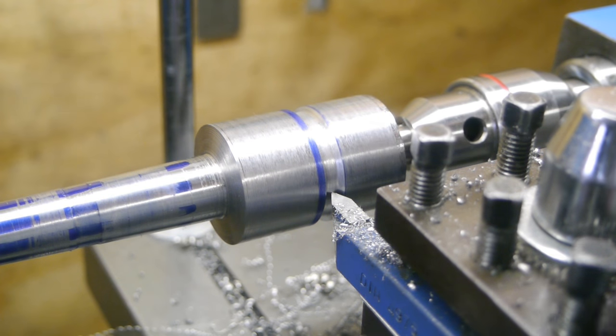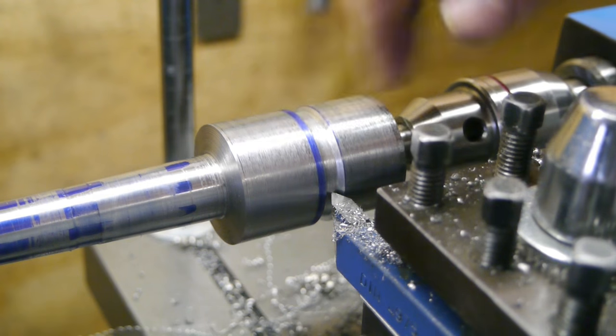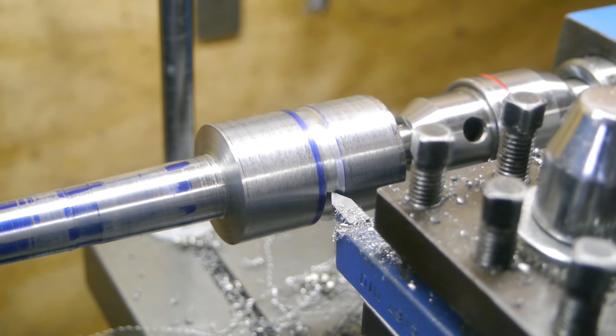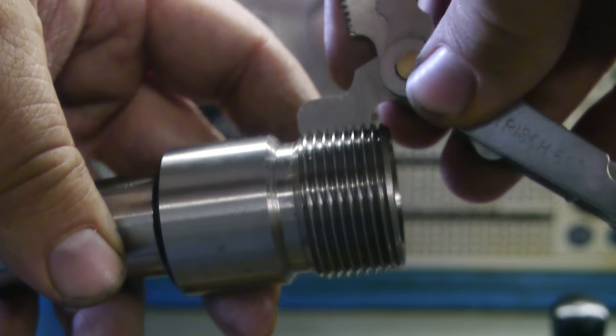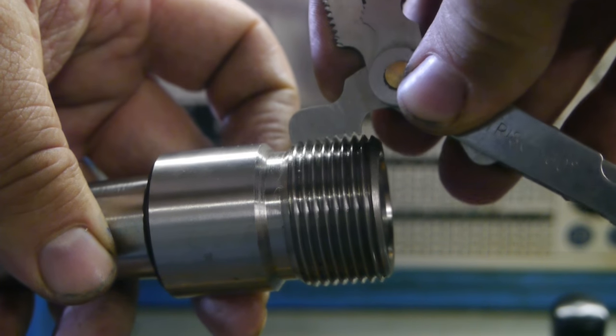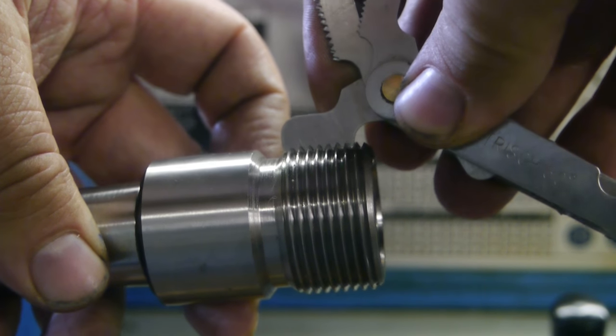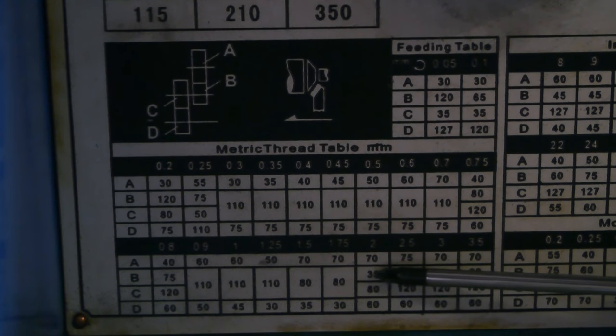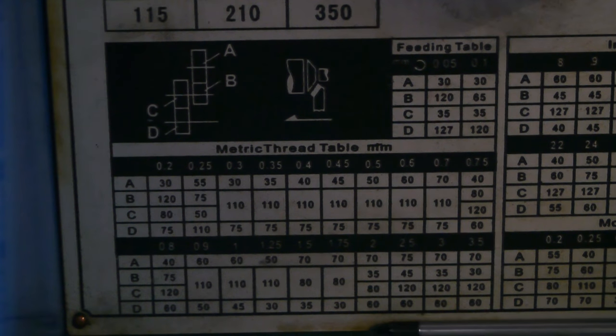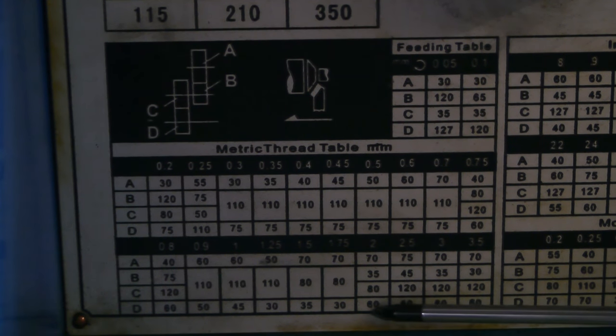That should do it. I'm just eyeballing this. The groove on the original is deeper than really necessary. According to this thread measuring thingy this is a 2.0 pitch thread. According to this table we need an 80 and a 60 gear.